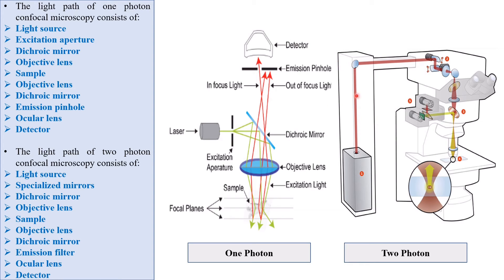In two photon confocal microscope, we don't use any pinhole. Instead of the excitation aperture used by the one photon microscope to filter excitation light, two photon microscope uses specialized mirrors to control the movement of light in the XY axis of the tissue. Infrared does not need any filter because it does not produce any color, so it's not needed to cut off any spectrum.